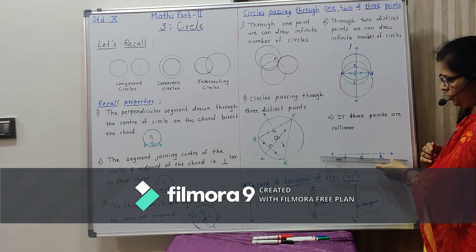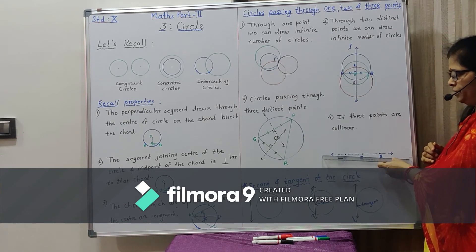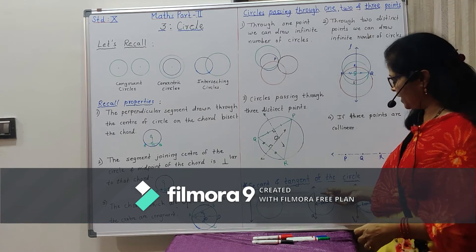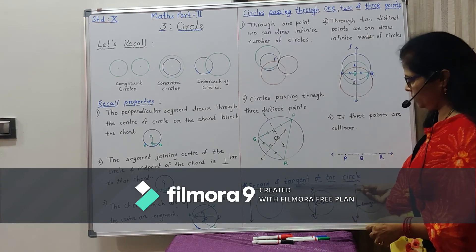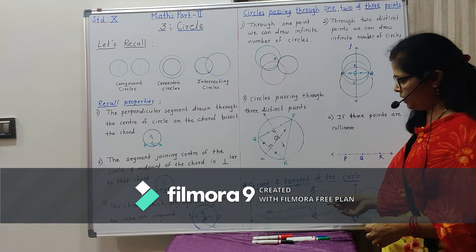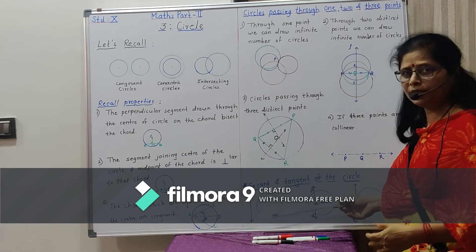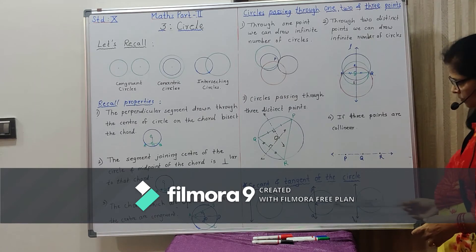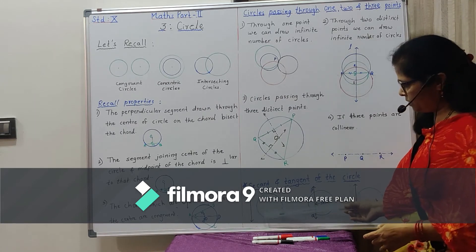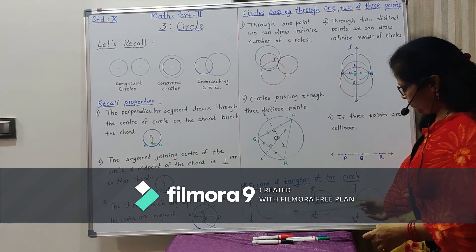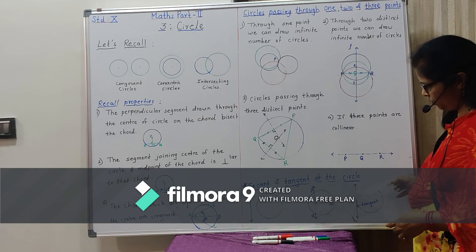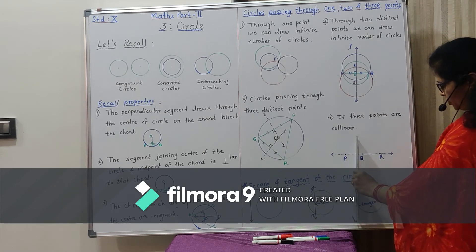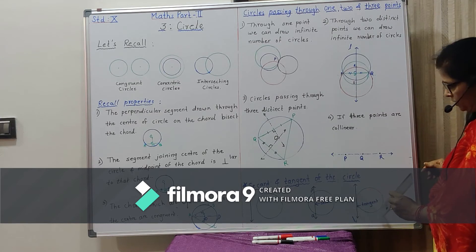If three points are collinear, there is no circle passing through those three collinear points. Now the next terms are secant and tangent of a circle. If a line and a circle are given in a plane, there are three possibilities: the line does not intersect the circle, the line intersects the circle at two points, or the line touches the circle at one point.